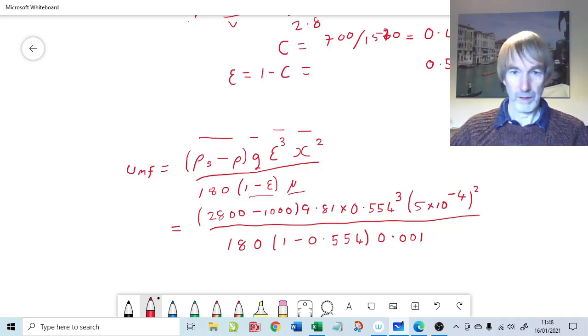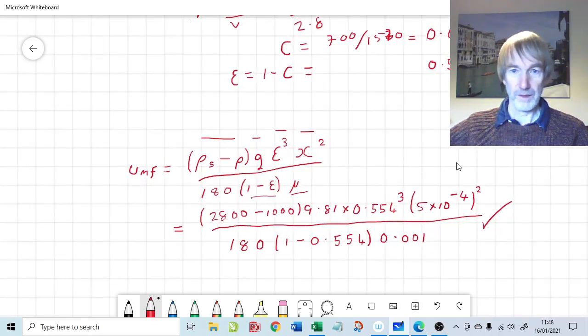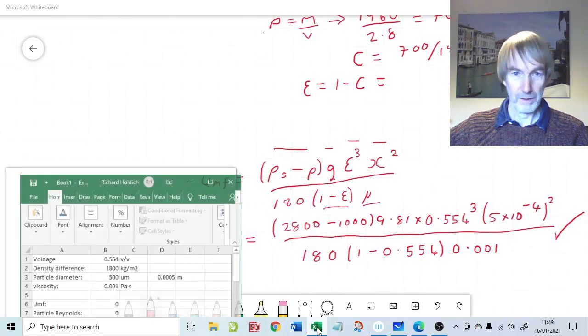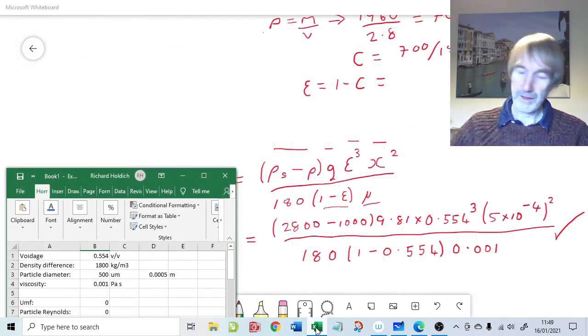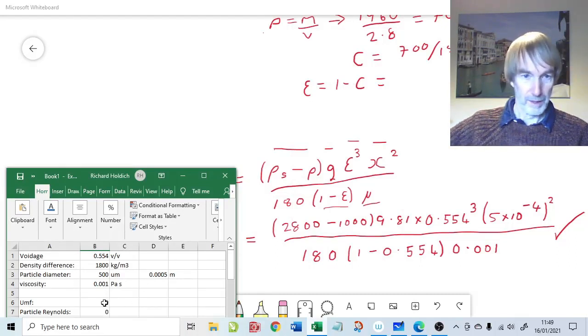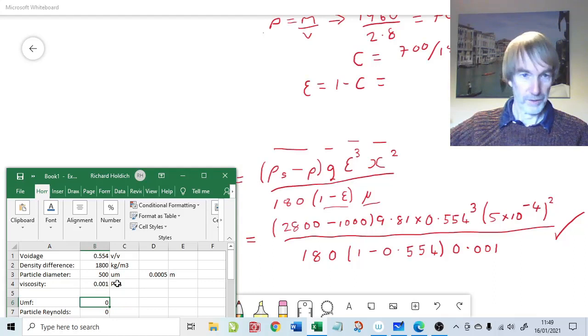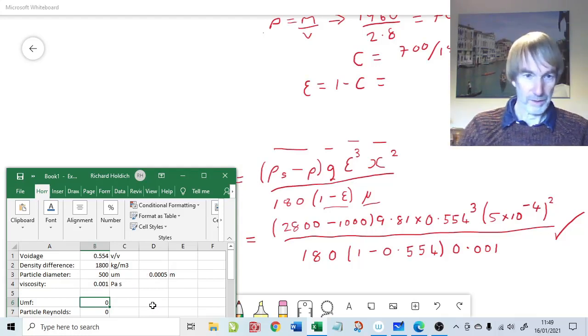Hence, here are values plugged into the equation that we need to solve. I'll put that just slightly over here because I'll kick up the spreadsheet. Because the calculations are a bit too advanced for my little calculator. But I'll take you through the problem. I've put the data in just here for the voidage, the density difference, the particle diameter, and the viscosity. Now let's do the calculation.